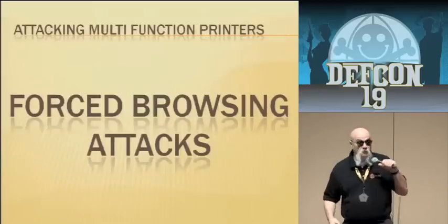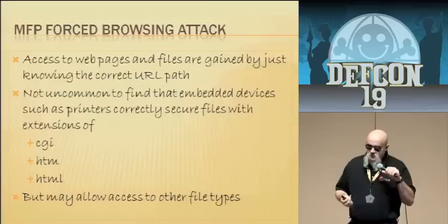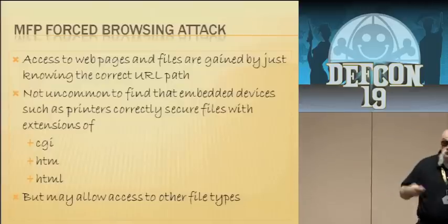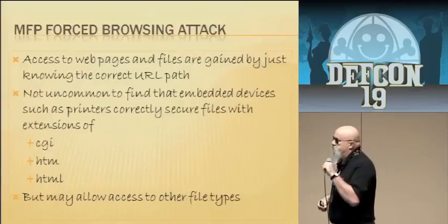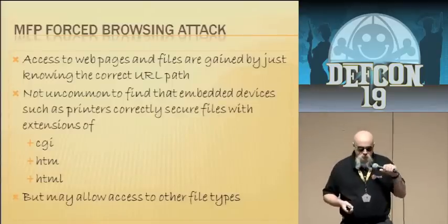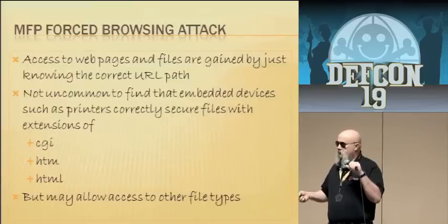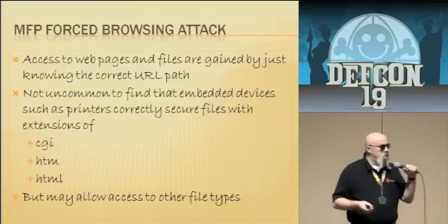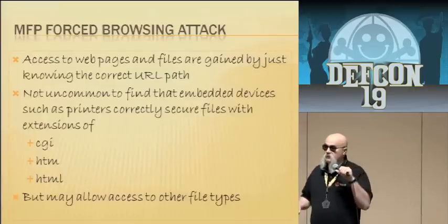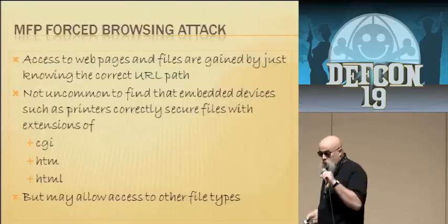Next is forceful browsing. With a forceful browsing attack, if you know the URL you want to get to, you just type it in regardless of device security. One thing I've noticed over many years of looking at embedded devices and multifunction printers is that they often properly handle security on standard file extensions like .cgi, .htm, .html — but non-standard file extensions can be queried directly with no authentication required.